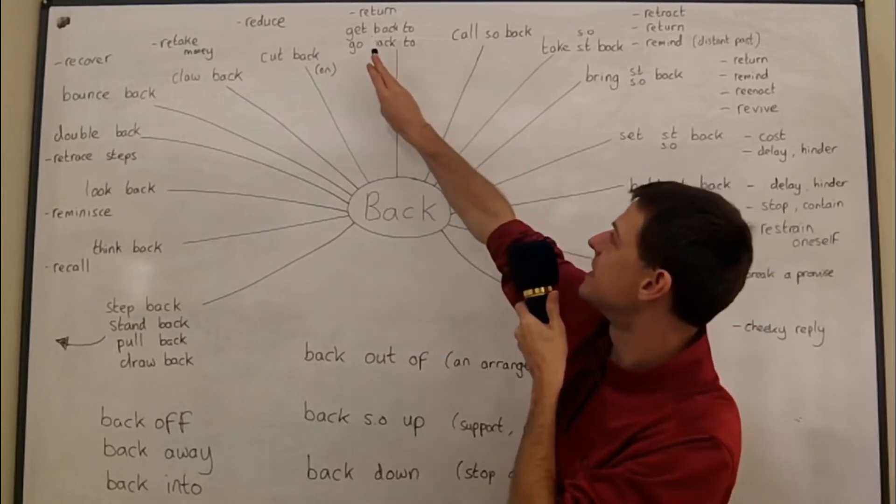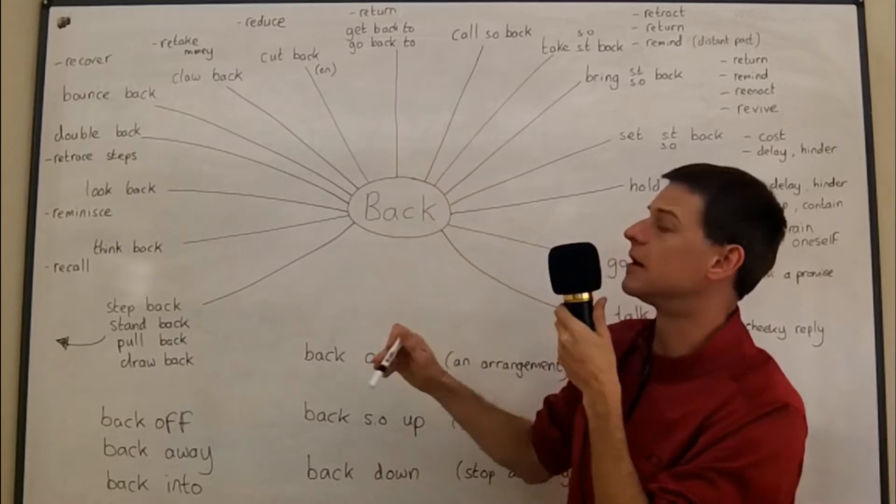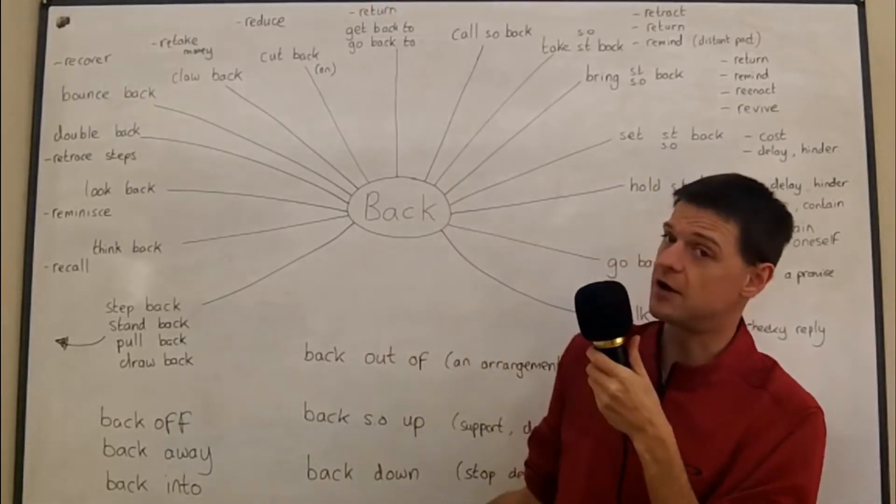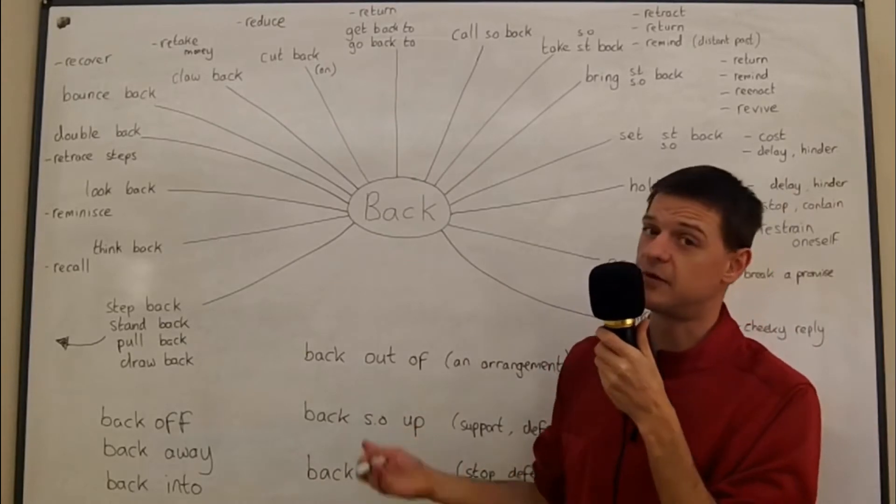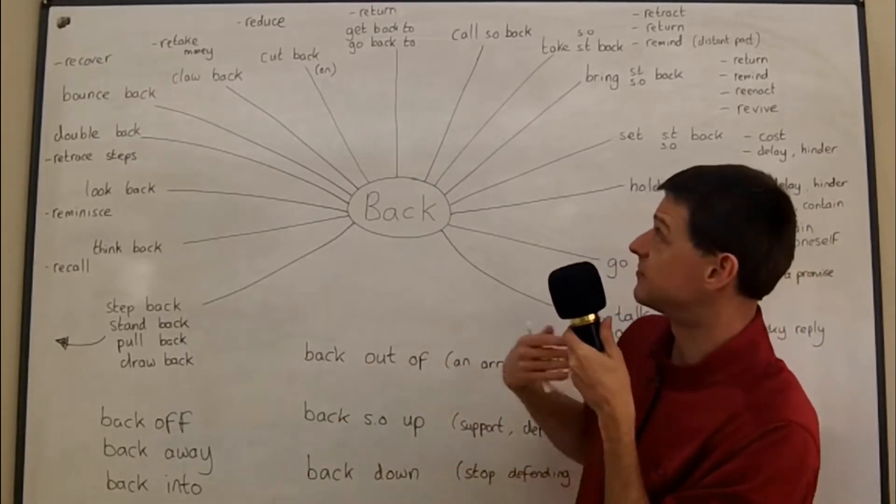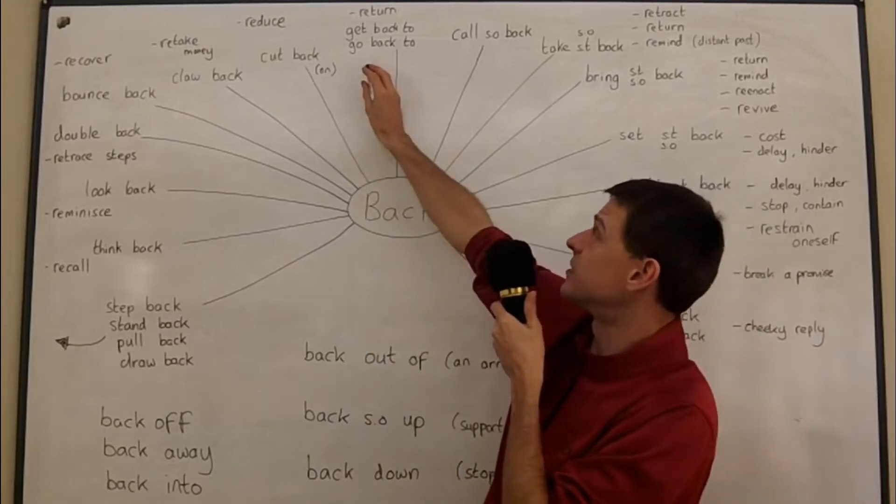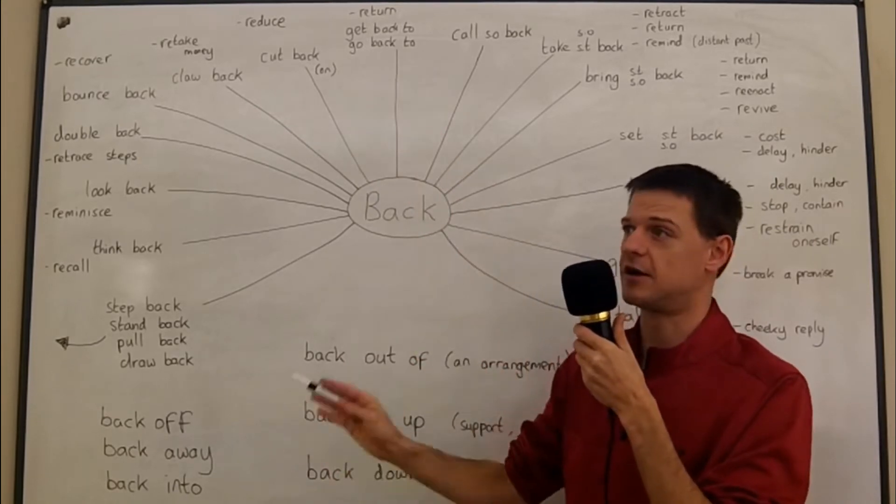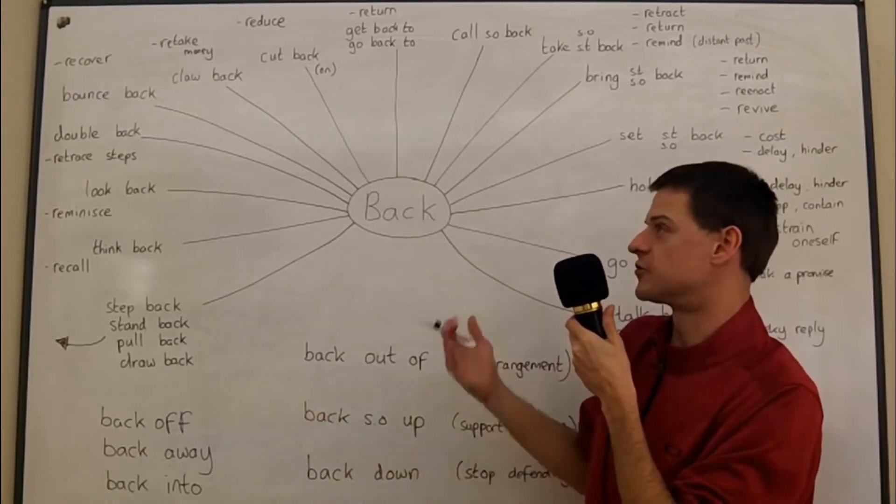So let's have a look. I think get back to and go back to are perhaps some of the easiest ones with back because they just mean return. You can say, for example, if you're a teacher, let's get back to the main topic of the lesson - let's return to the main topic - but you could also say let's go back to the main topic. And of course it can mean physically return in a car or on a train or something like that.